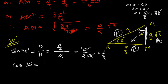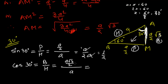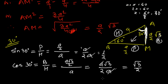Now let's find cos 30°. Cos is base upon hypotenuse. The base here is AM = (√3 · a)/2, since the angle is seated on the AM side. So cos 30° = (√3 · a / 2) / a = √3/2. The value of cos 30° is √3/2.